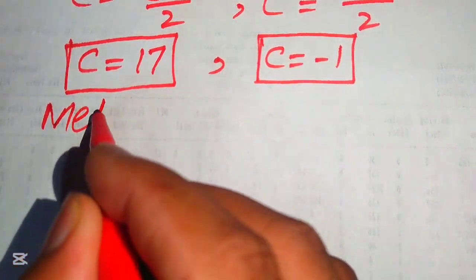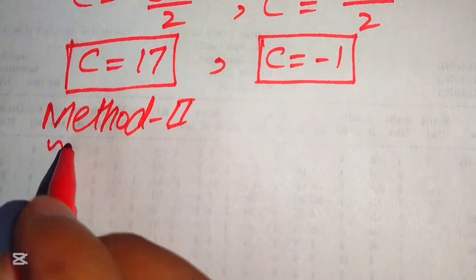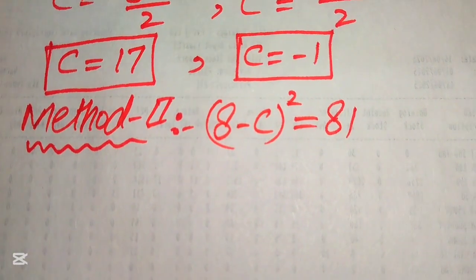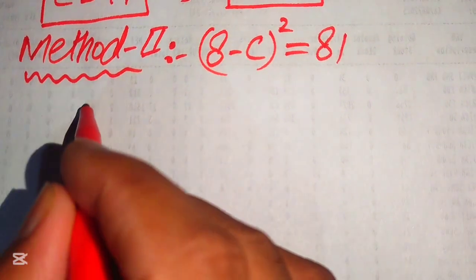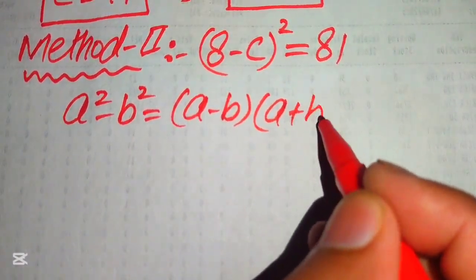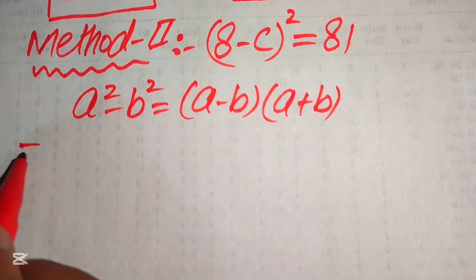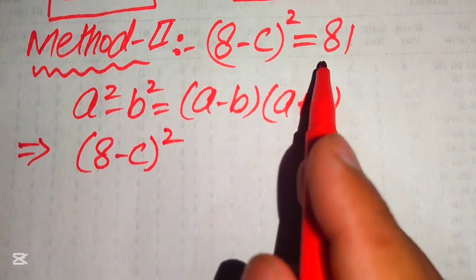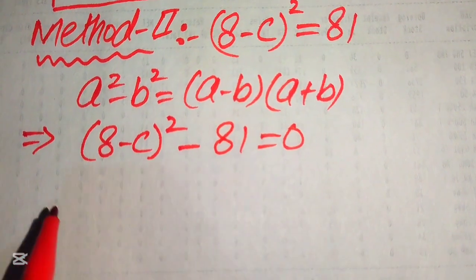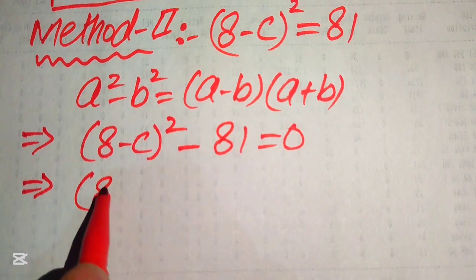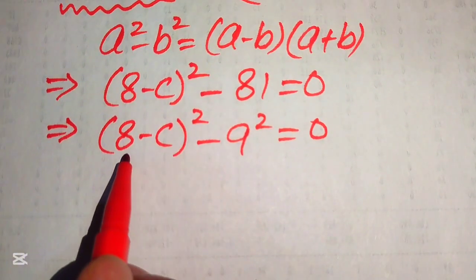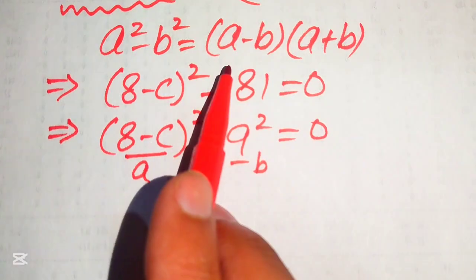Now we move to the second method. We again start with the given equation: (8 minus C) whole square equals 81. In the second method we use the difference of squares formula: A squared minus B squared equals (A minus B)(A plus B). We move 81 to the left-hand side and write 81 as 9 squared, giving (8 minus C) squared minus 9 squared equals 0.